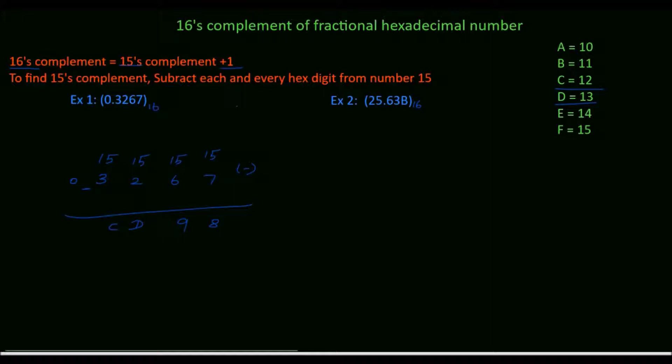Before the fractional point, we don't have any valid digits, so leave this. Point CD98 is the 15's complement.